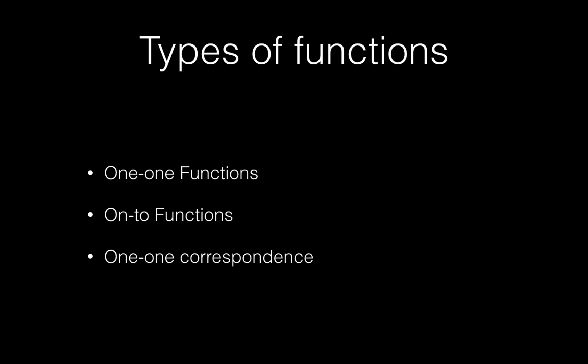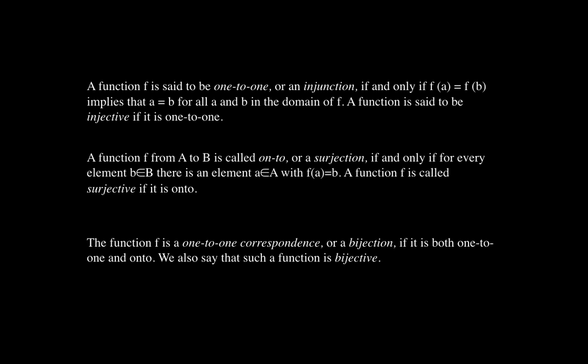Now let's discuss different types of functions. We have one-to-one functions, onto functions, and one-to-one correspondence — the bijective function, which is a combination of both. A function f is said to be one-to-one, or injective, if and only if f(a) = f(b) implies a = b, for all a and b in the domain of f.